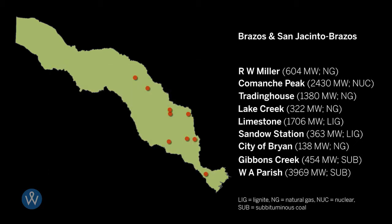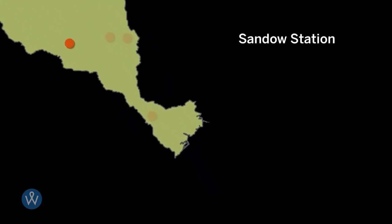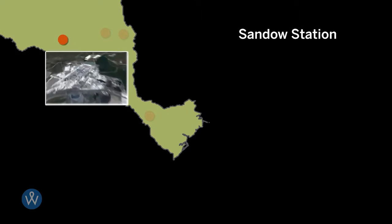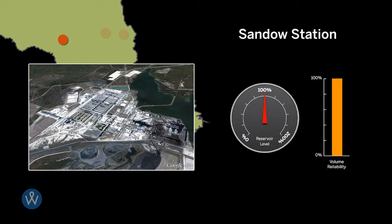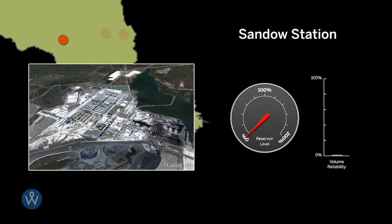Here we'll focus on reliability. The Sandow Generating Station, for example, has reliability of 100 percent with existing levels of storage during the drought of record. When half of the existing reservoir storage is unavailable, reliability falls to 93 percent. When existing reservoir storage is completely dry, reliability falls to 1 percent.